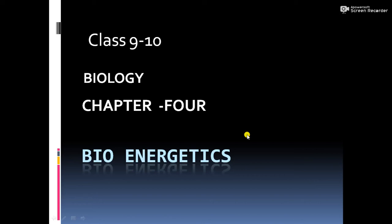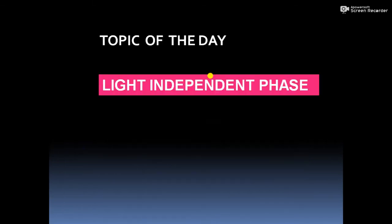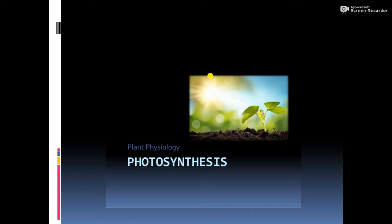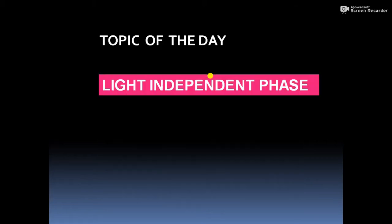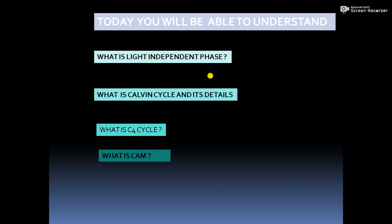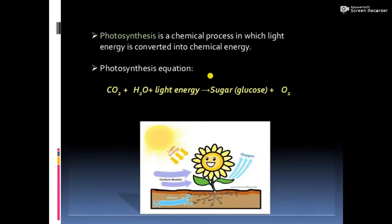Assalamu alaikum dear students, hope you are doing well. Today I am going to conduct a class for the students of Class 9-10 Biology, Chapter 4: Bioenergetics. Today's topic is about photosynthesis, specifically the light independent phase. We will discuss the Calvin cycle and its details, the C4 cycle, and CAM.